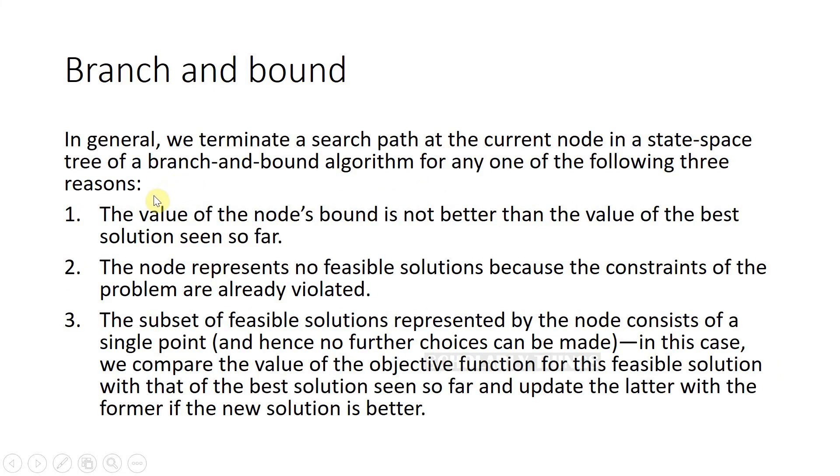We terminate the search path for these three reasons. First, if the bound is not better than the best solution seen so far. Second, when a node is not a feasible solution because the constraint of the problem is violated. Third, if the subset of feasible solutions represented by the node consists of a single point. In that case, update best solution seen so far with the value of objective function if the new solution is better.